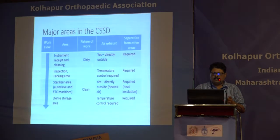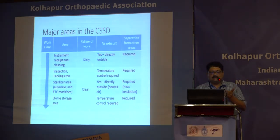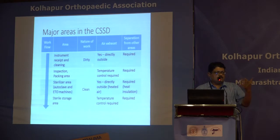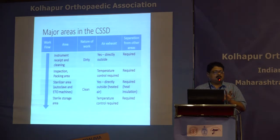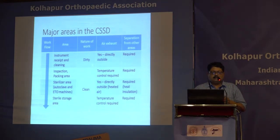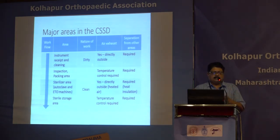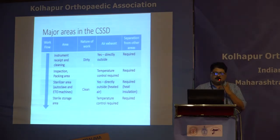These are the major areas in an ideal CSSD if you have the space for all four separate areas. First is the instrument receiving and cleaning area, where dirty work is done — blood and body fluids will come there. The air must be exhausted directly outside; a simple exhaust fan above the basin can be sufficient, and separation from other areas is required. The second area is inspection and packaging: after cleaning and drying, instruments and linen come here, drums and trays get packed, and indicators are added. From this point onwards everything is clean activity.